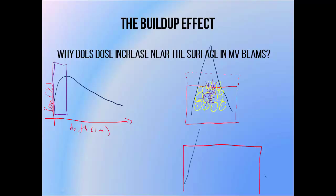Textbooks generally use a more rigorous one-dimensional explanation for the buildup effect. We look at each point as producing electrons, but only how they travel in one direction. Assuming each point produces roughly the same number of electrons, and that dose is proportional to the number of electrons passing through, different depths have a different number of electrons passing through. At a shallow depth we get 1, slightly deeper we get 2, then 3, then 4 electrons passing through. Depths with more electrons get a higher dose, so dose increases with depth — up to a point where the electron count levels out at 4.